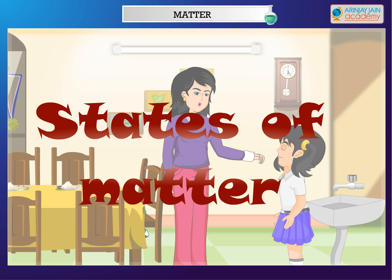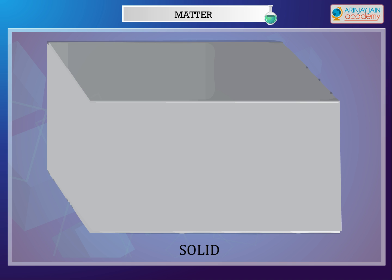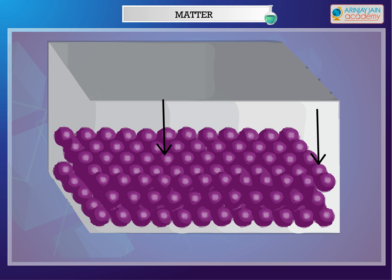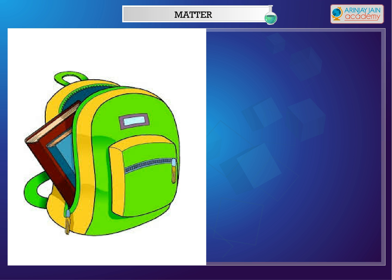All matter is made up of molecules. Depending on the way these molecules are arranged, matter can exist in three states. Solids are hard and cannot be pressed. In a solid, the molecules are packed very close to each other, so there is very little space between them. As a result, they cannot move freely. This makes solids hard and gives them a fixed shape. In other words, solids have a definite shape and fixed volume. For example, the shape of a book stays the same whether you put it in a bag or place it on a table.